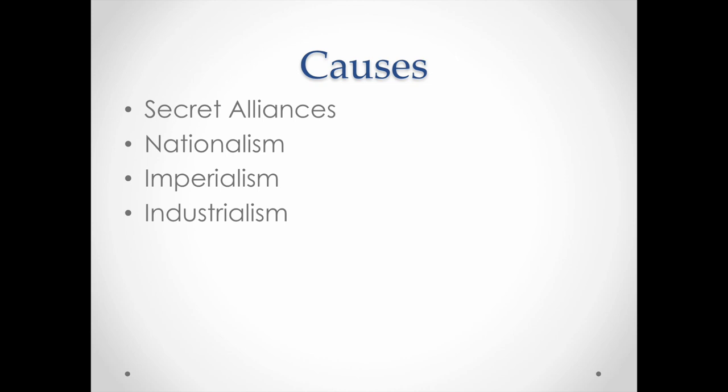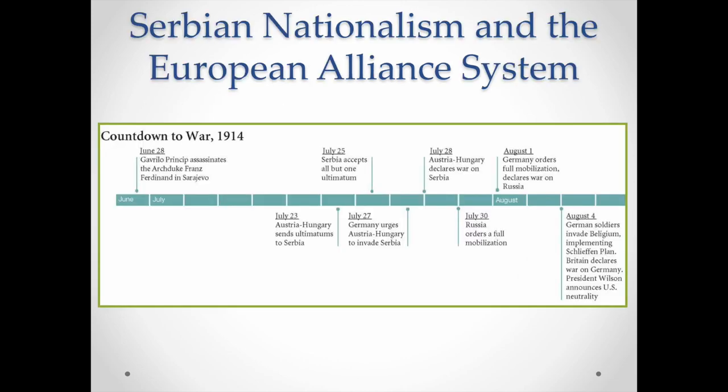The ideas of imperialism were closely aligned — this idea that we have to build a strong empire and protect and defend that empire. It also ties into industrialism, because that often was the funder of imperialism and nationalism. If we look at what was going on in the tiny nation of Serbia, and this idea of nationalism within the alliance system that had caught up much of Europe.